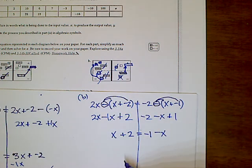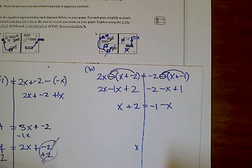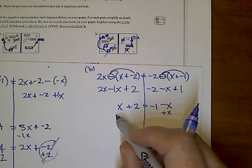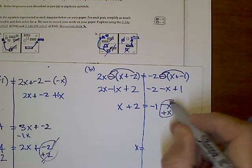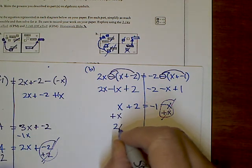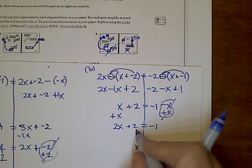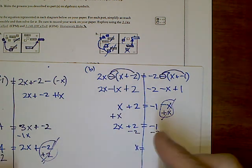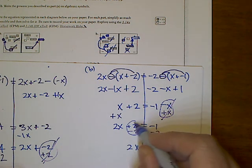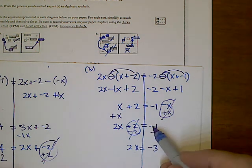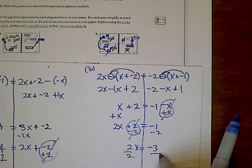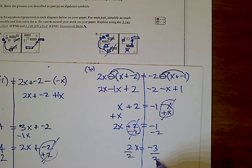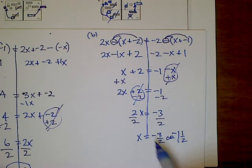To solve, I add x to both sides — the negative x cancels — giving x plus 2 equals negative 1. Then I subtract 2 from both sides: the 2's cancel, leaving 2x equals negative 3. Wait — that gives 2x plus 2 equals negative 1, then subtracting 2 gives 2x equals negative 3. Finally, dividing both sides by 2 gives x equals negative 3 over 2, or negative 1 and one half.